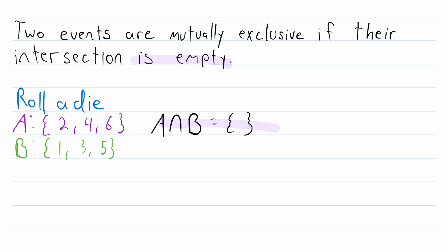Therefore, since their intersection is empty, A and B are mutually exclusive events. And what does this look like in a diagram?